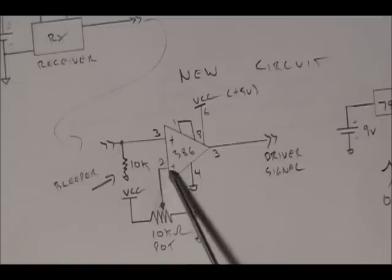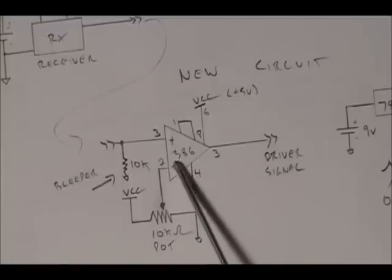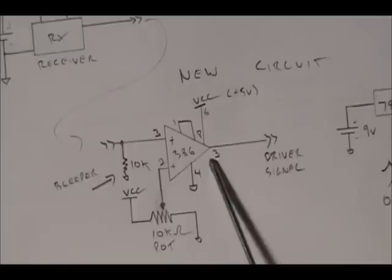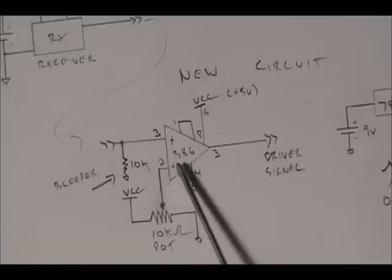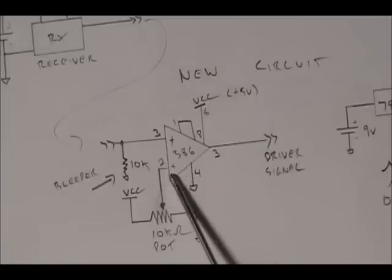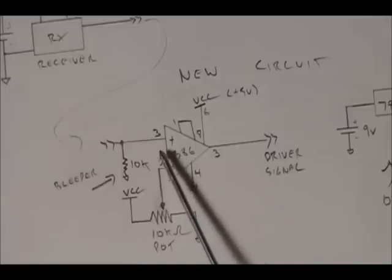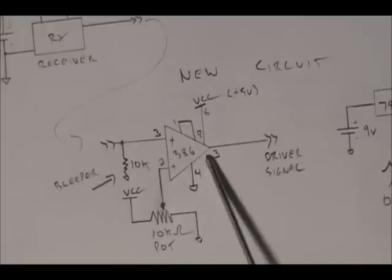So when the voltage here is higher than the voltage here, when the voltage at the negative is higher than the voltage at the positive, the output will be low. It will be 0 volts. But when the voltage at the positive is higher than the positive at the negative, i.e. when you activate the receiver line, the signal line, the output goes high.